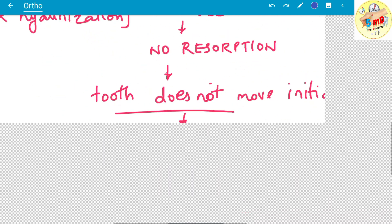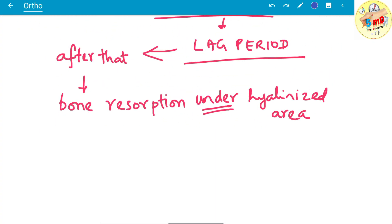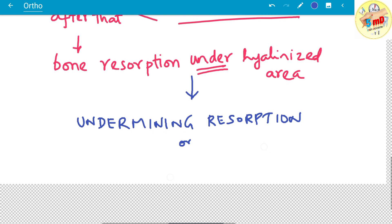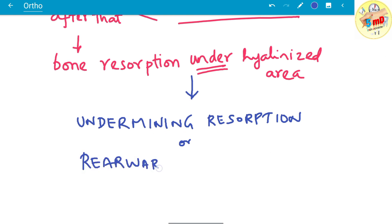Therefore this type of resorption is called undermining resorption or rearward resorption. Whereas in the minimal force or mild force, we saw the resorption was known as frontal resorption or direct resorption. Here, under the hyalinized zone, the resorption happens in excessive ortho force—we see undermining resorption or rearward resorption.